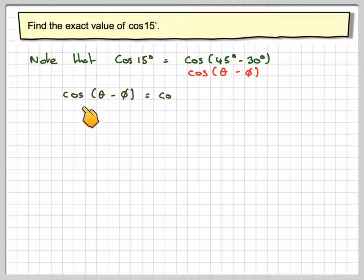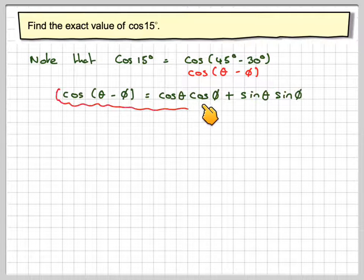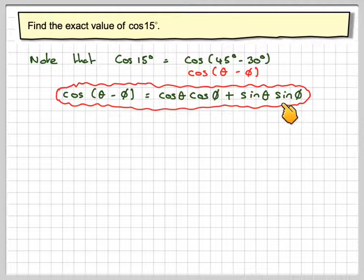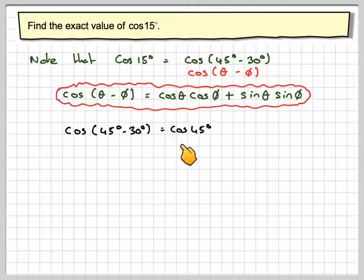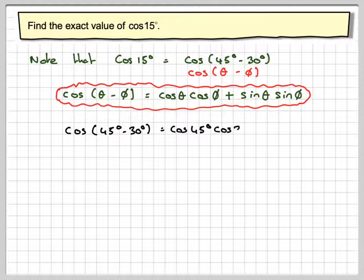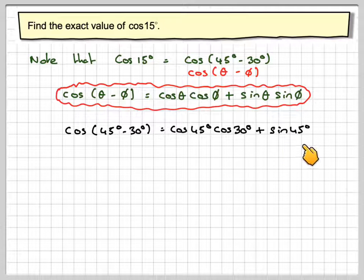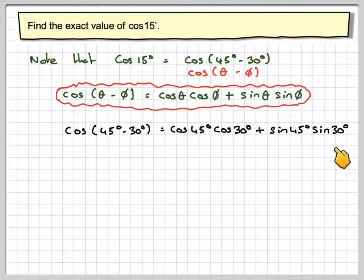Using the fact that cos(θ - φ) = cos θ cos φ + sin θ sin φ, we get cos(45° - 30°) is equal to cos 45° times cos 30° plus sin 45° times sin 30°.